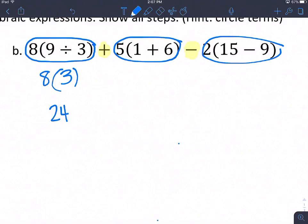Now I'm going to do the next term. 5 times 1 plus 6. I need to, again, do what's in parentheses first. So this becomes 1 plus 6, which is 7. So 5 times 7, which is 35.